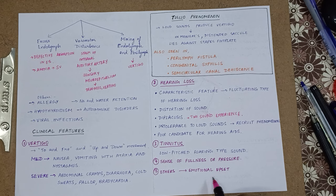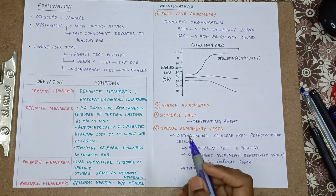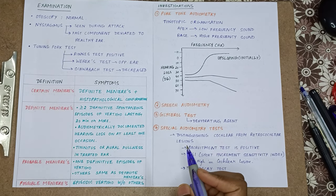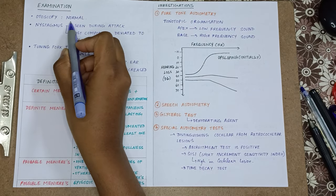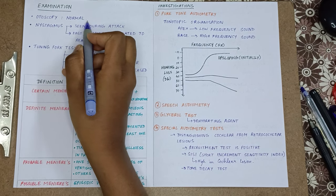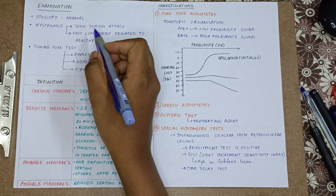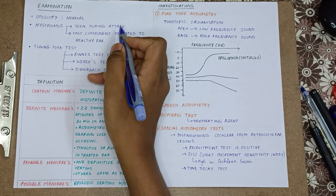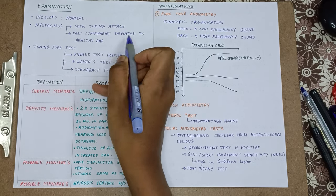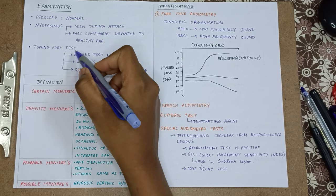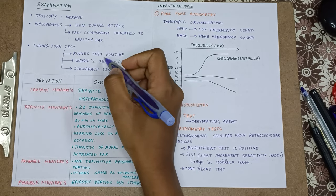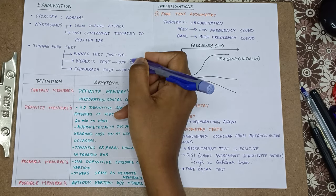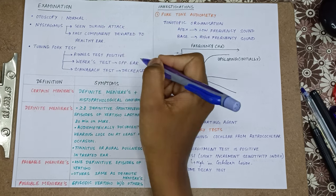Other features may be emotional upset. In examination, otoscopy is normal because the tympanic membrane is not affected. Nystagmus is a conjugate eye movement seen during the attack — the fast component is deviated towards the healthy ear. Tuning fork tests: Rinne's test is positive, Weber's test is directed towards the opposite ear, and Schwabach test is decreased.